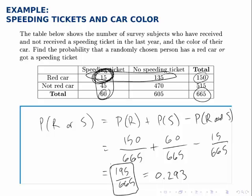So close to 30% of the subjects in this survey either had a red car or got a speeding ticket in the last year.